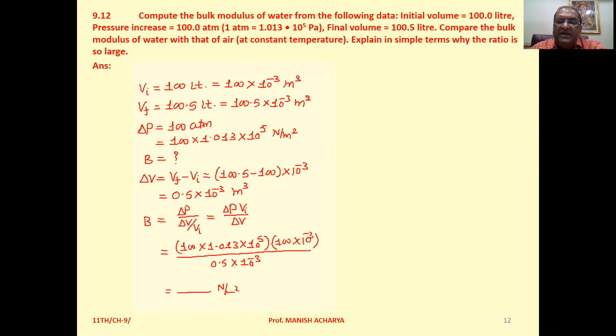Change in volume is final volume minus initial volume. So 100.5 minus 100, 10 raised to minus 3 is taken common. So it is 0.5 times 10 raised to minus 3 meter cube.